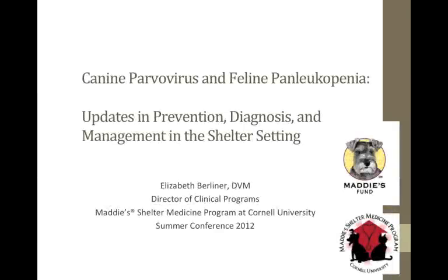Today's talk is about canine parvovirus and canine panleukopenia, specifically some new ways we're using tests to assess what could be outbreaks in our shelters. I'm not talking about distemper today because throwing it into the mix just confuses things. Only a couple of people in the audience have used antibody testing for parvo or distemper in their shelter. My hope is that by the end of this you'll walk away with practical information on how to use newer tests, or older tests in a newer way.